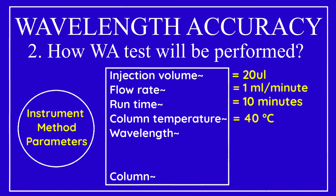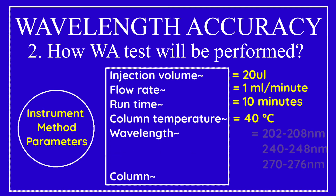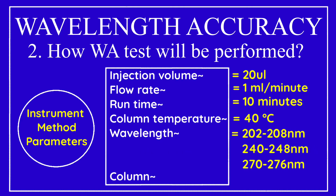Three sets of wavelengths are used during the wavelength accuracy test: 202 to 208 nanometers, 240 to 248 nanometers, and 270 to 276 nanometers. Generally, a C18 column with 150 mm length, 4.6 mm diameter, and 5 micron particle size is used for the wavelength accuracy test.